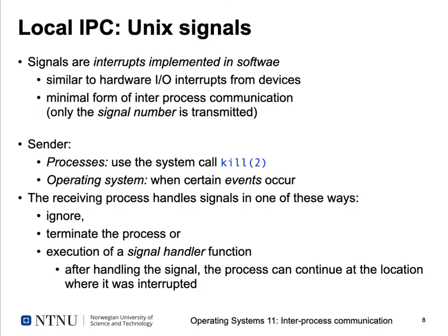For local IPC — within a single computer — one of the simplest mechanisms is Unix signals. Signals act like software interrupts, similar to hardware I/O interrupts. They are a minimal form of IPC since only a signal number is transmitted. A process sends a signal using the kill system call, which — despite its name — is a general-purpose signal-sending facility.